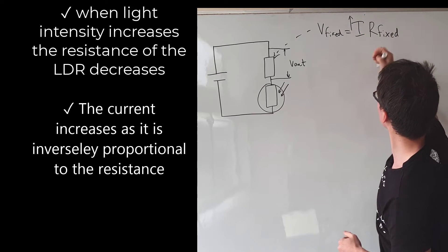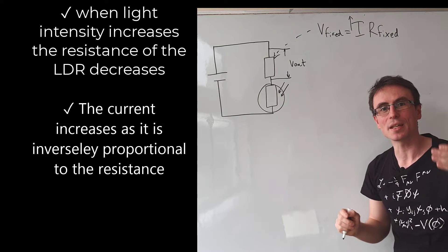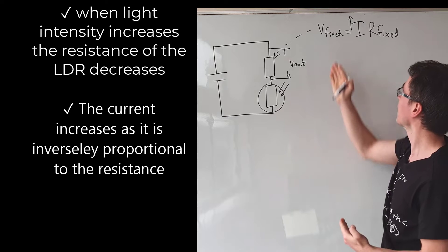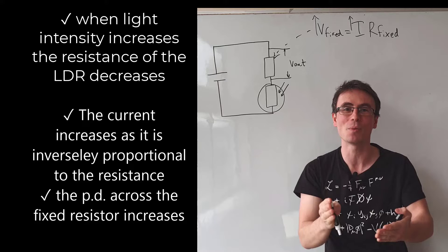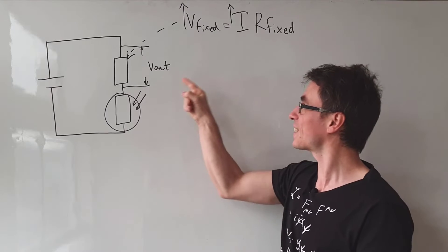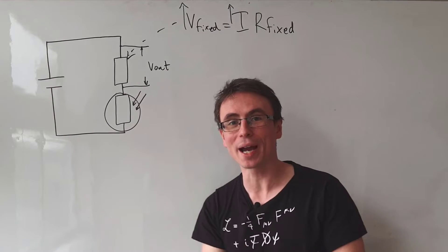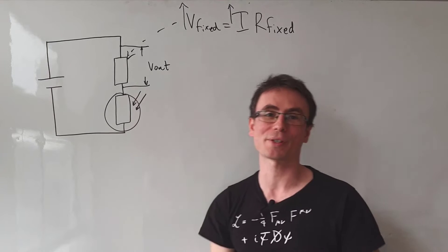If the current goes up and the resistance is fixed, this means that the potential difference across the fixed resistor will also increase. This is why we place our output voltage across the fixed resistor.